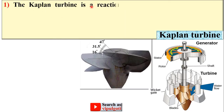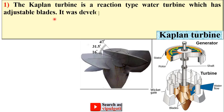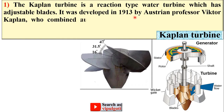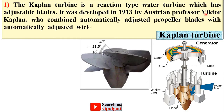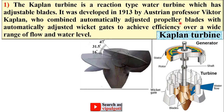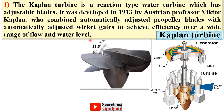The Kaplan turbine is a reaction type water turbine which has adjustable blades. It was developed in 1913 by Austrian professor Viktor Kaplan, who combined automatically adjusted propeller blades with automatically adjustable wicket gates to achieve efficiency over a wide range of flow and water level, that means head.